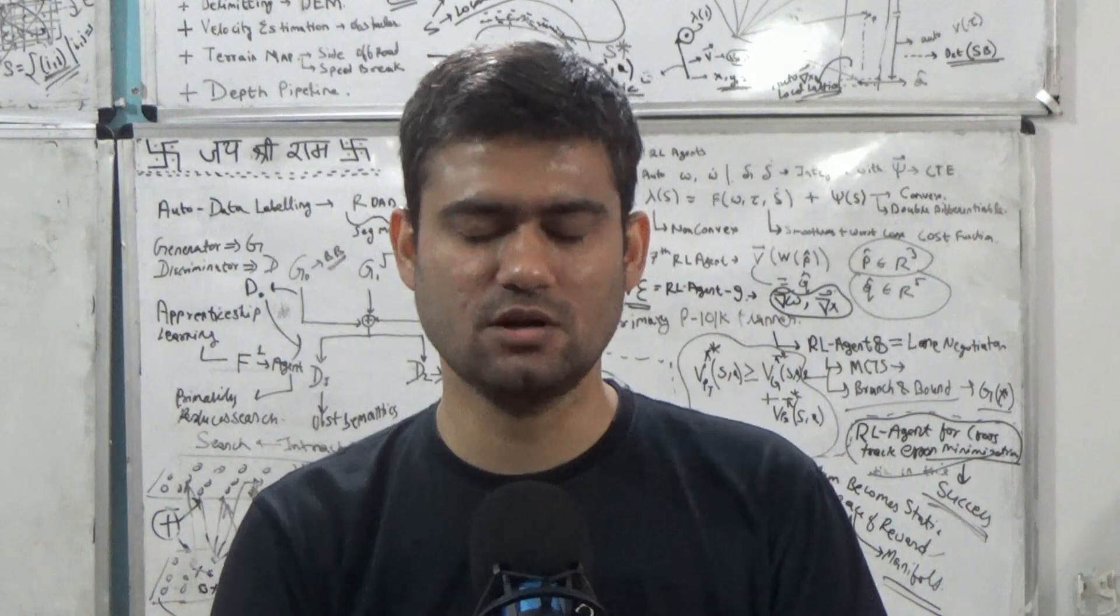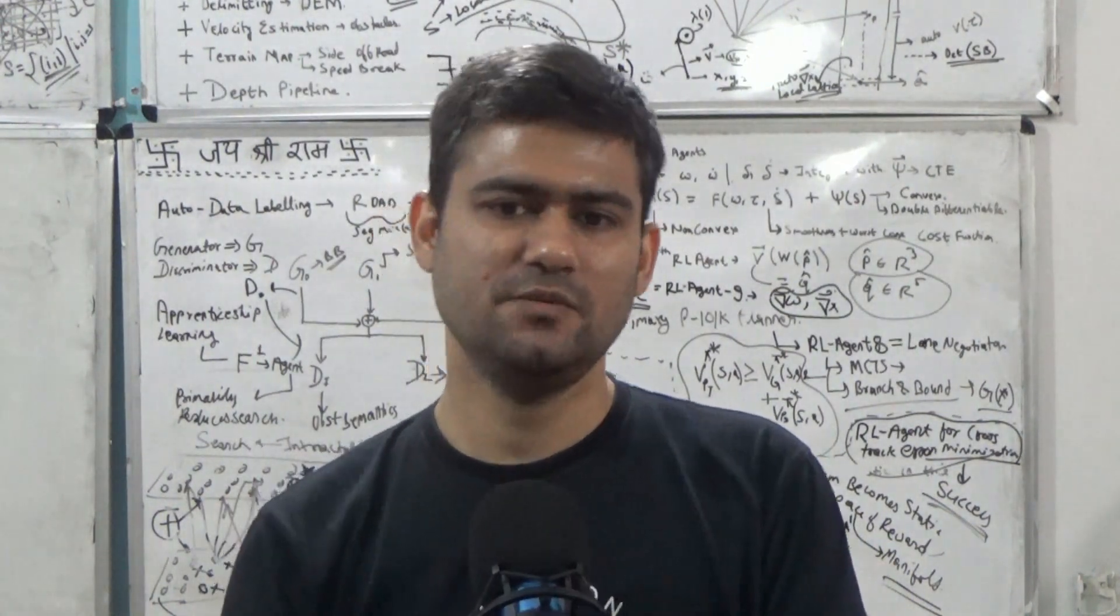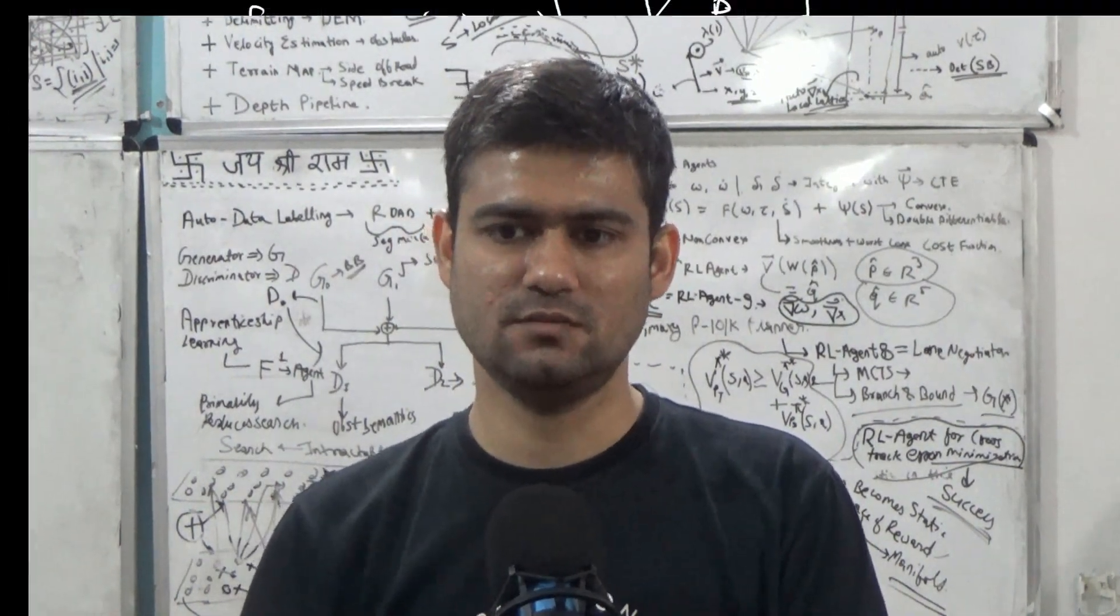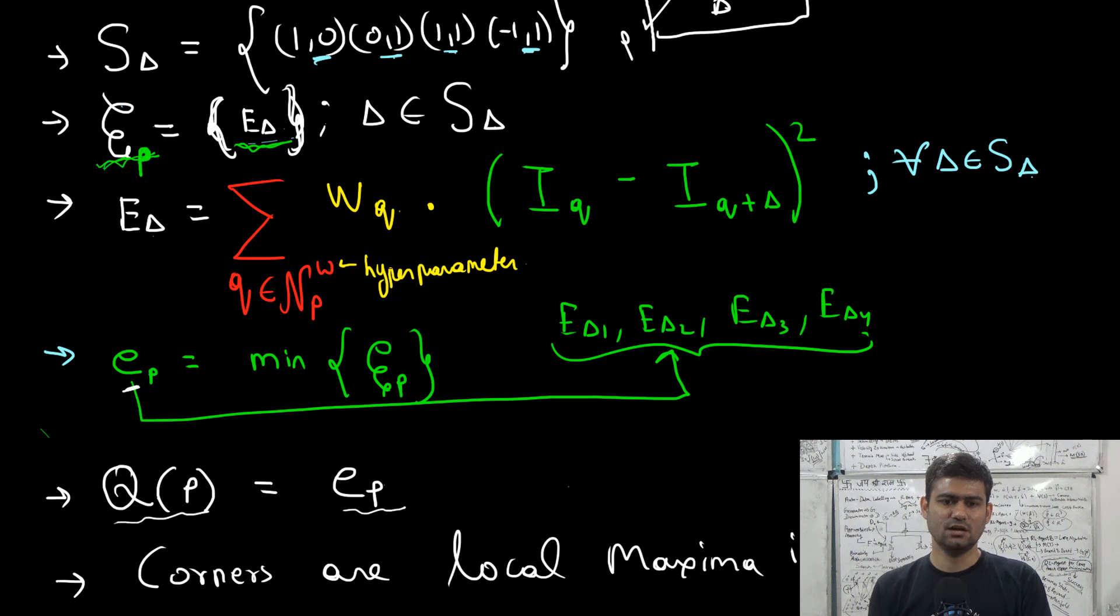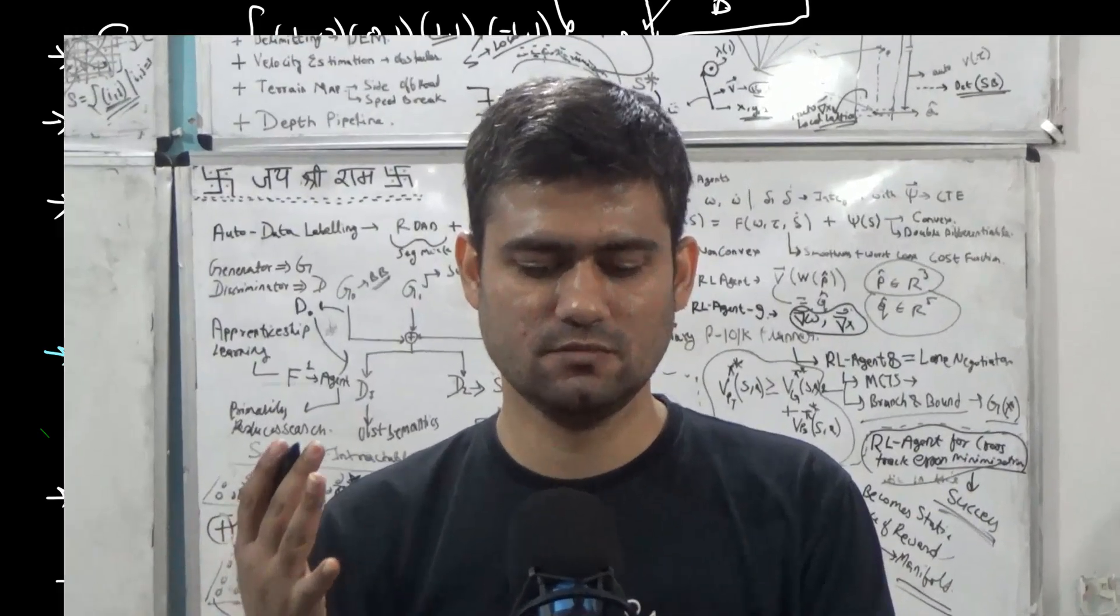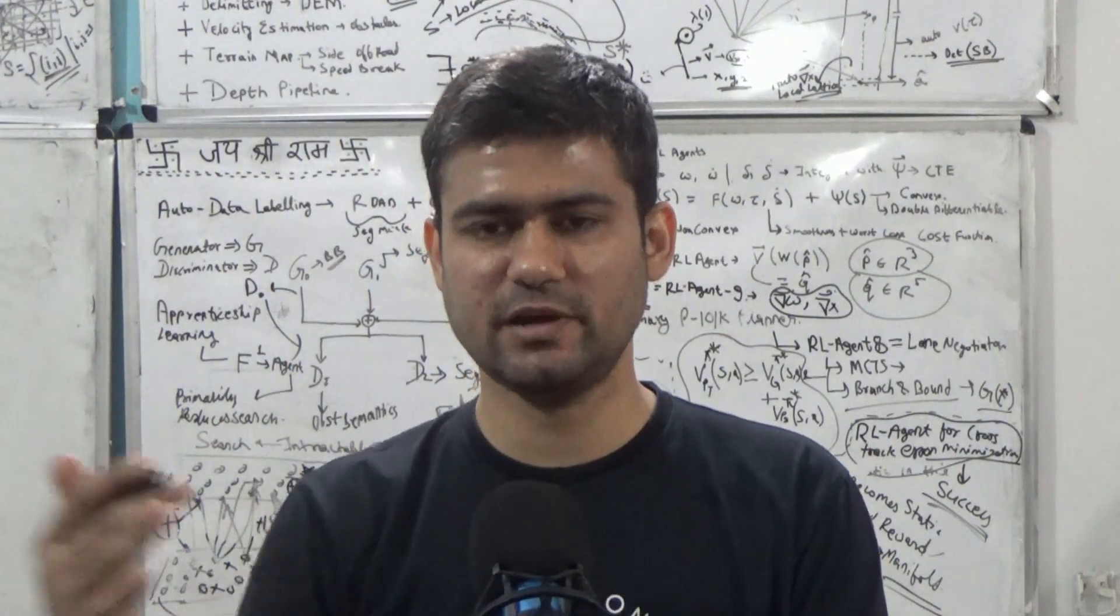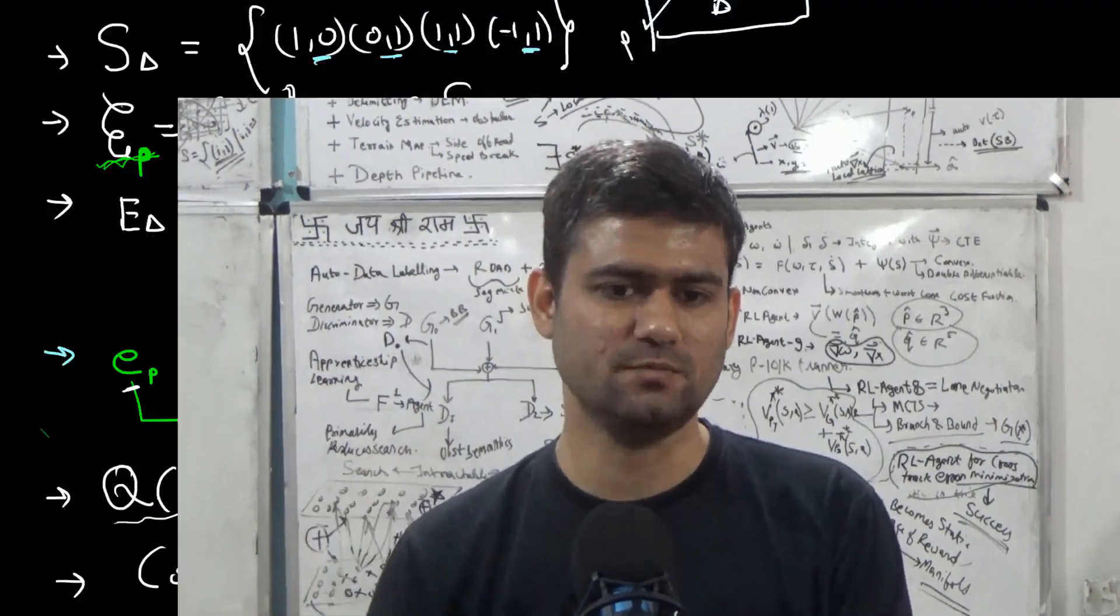So this is what the Moravec corner detector is and this is what we have learnt. And we also discussed that in Moravec corner detector this weighting scheme uses uniform weights, so it assigns equal weight irrespective of how far the pixel is from the center pixel.